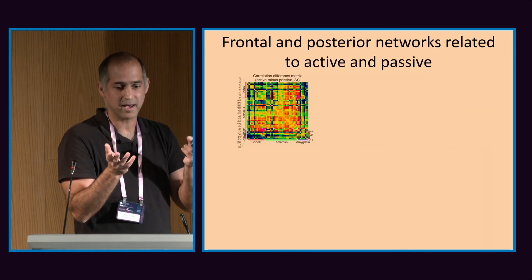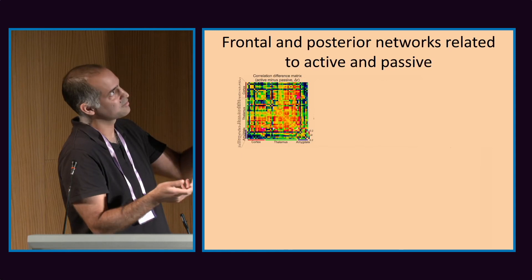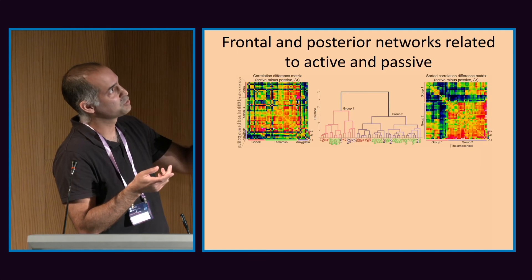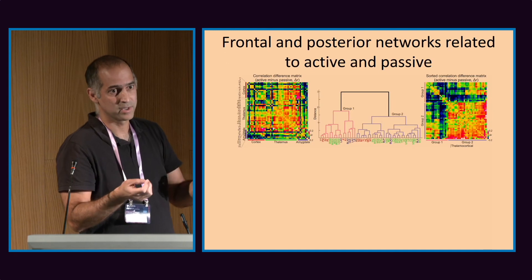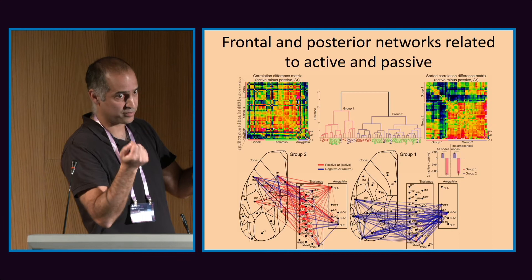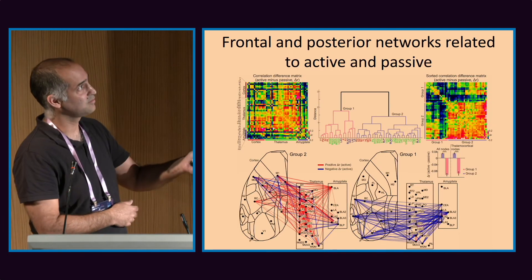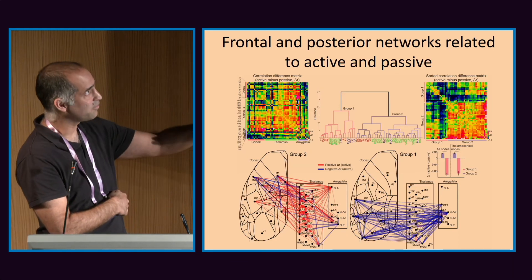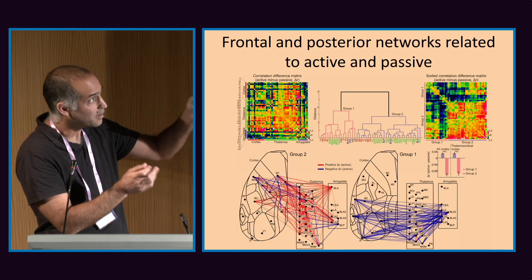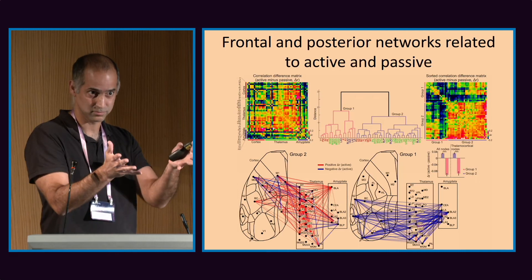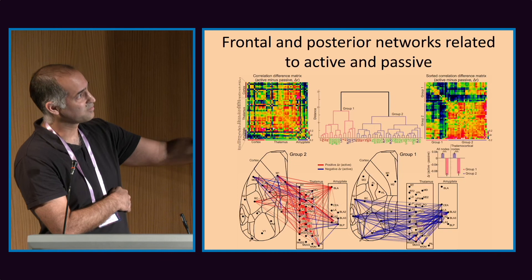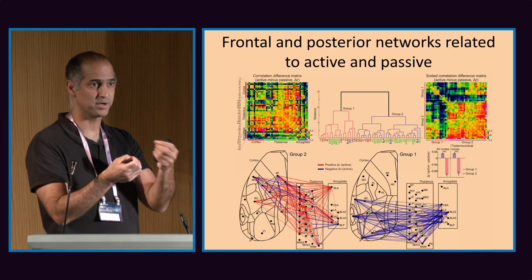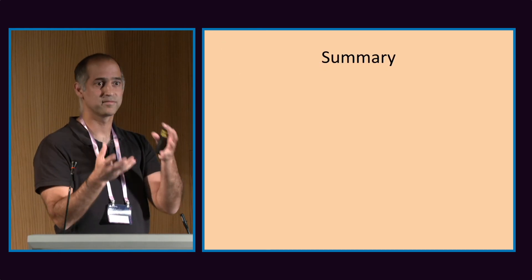In the last slide, let's try to make some order out of this matrix. We take this matrix and with simple hierarchical clustering group them into two groups, then re-sort the matrix and superimpose the pairs back onto the map of the brain. You can see two groups: one group is red — more biased to the active state — involving frontal cortex, frontal thalamus, and also a bit of frontal amygdala. The other group is blue — more biased to the passive state — involving posterior areas in cortex such as area P and auditory, but also posterior thalamic areas and amygdala areas.